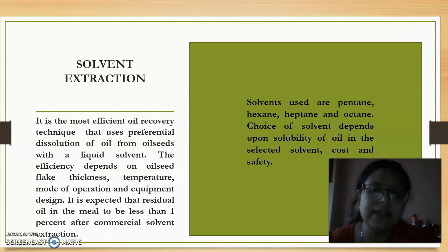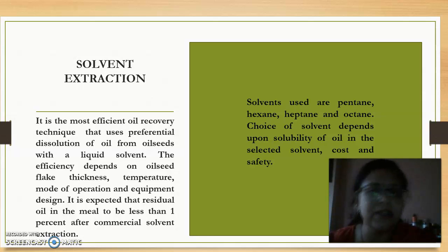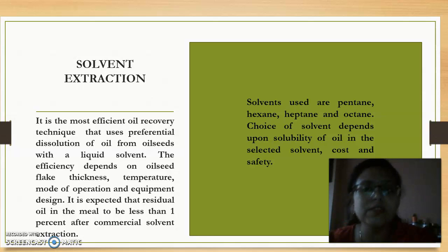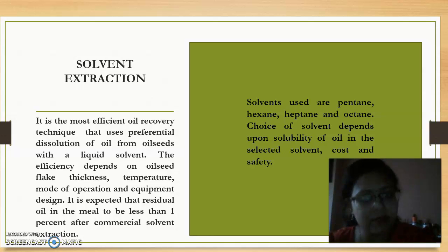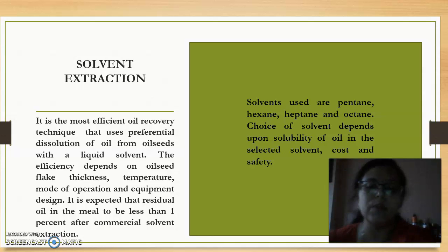Next, coming to solvent extraction. The principle is the preferential dissolution of oil from oil seeds with a liquid solvent. The solvents used are organic solvents like pentane, hexane, heptane, and octane. The choice of solvent depends upon the solubility of oil in the selected solvent, the cost, and safety. It is expected that the residual oil content in the oil seeds after commercial solvent extraction should be below 1%.